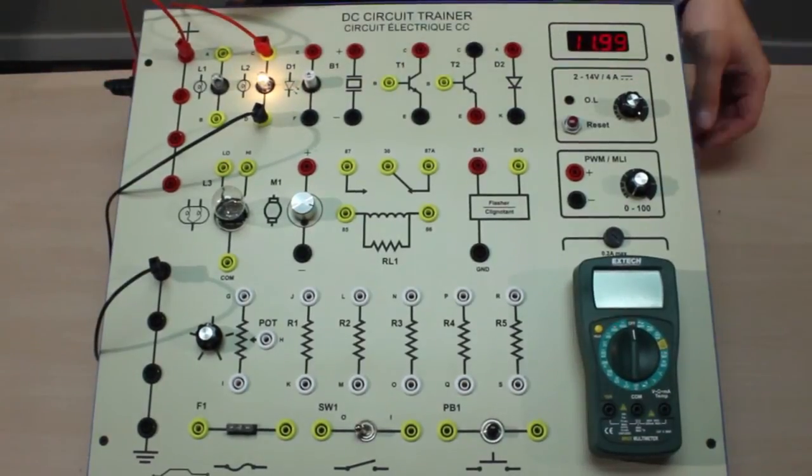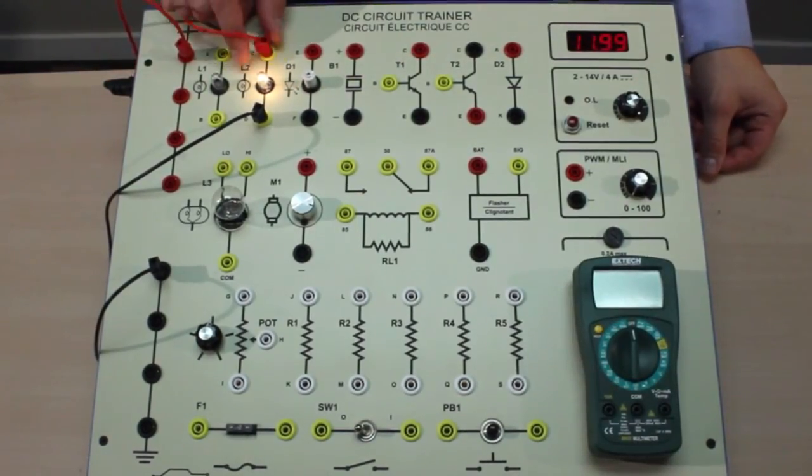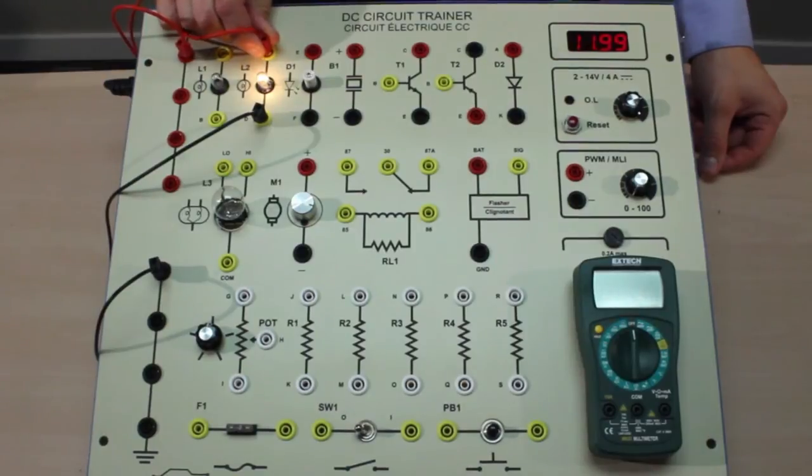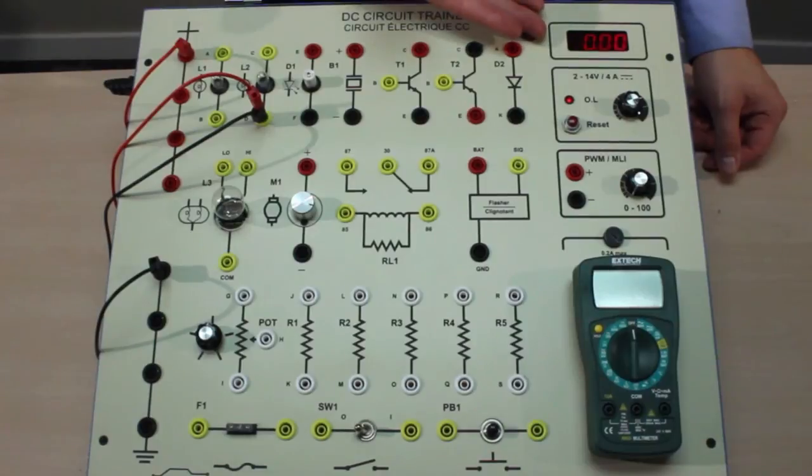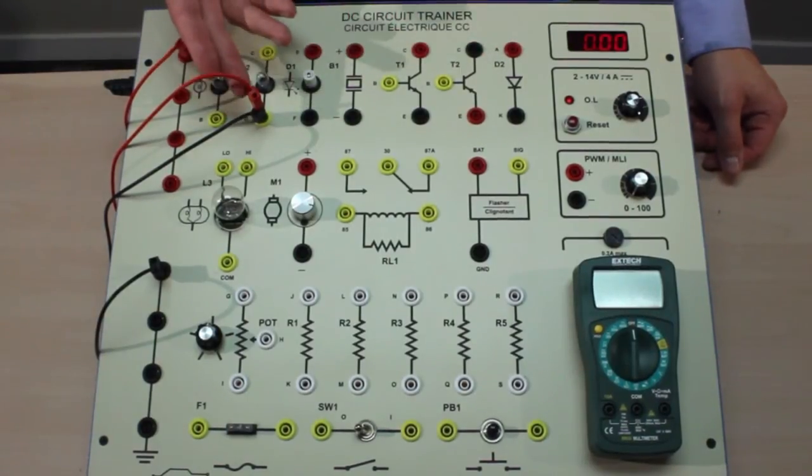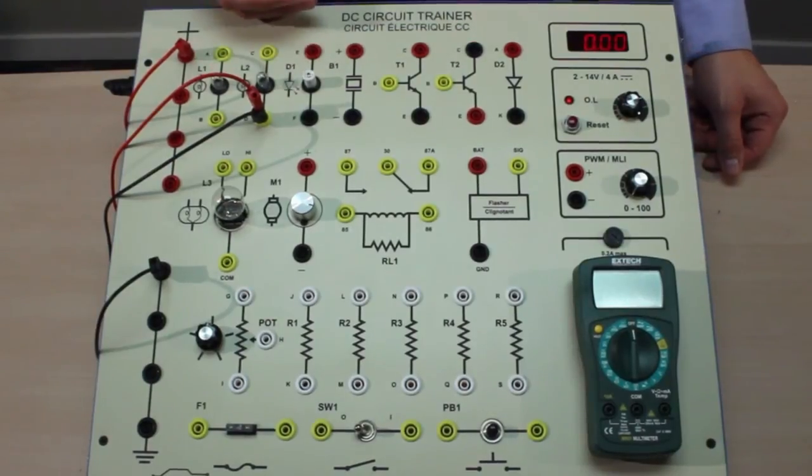Now if for example students make a mistake and they bypass the light bulb, shorting the circuit, the trainer is protected and we see that the overload protection is tripped. So there's no way that the student can damage the power supply by making a small mistake.